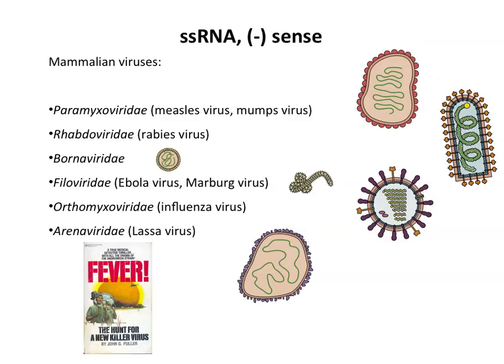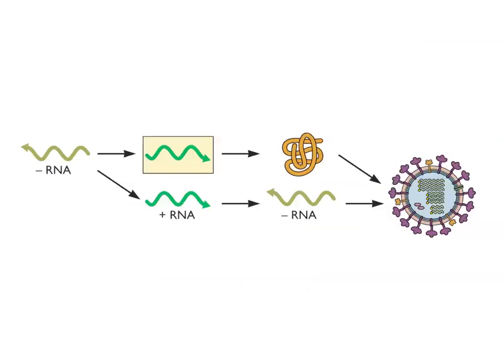Lassa virus was discovered in the 1960s and is the subject of the book 'Fever' by John Fuller — I read this in high school and it's what made me want to be a virologist. It actually involves Columbia University: a virologist at Yale was working with this virus from Nigeria, accidentally infected himself through mouth pipetting, was brought to Columbia Presbyterian Hospital, and was saved by serum from a recovered Nigerian nurse. The virus-encoded RNA polymerase is both in the virion and encoded in the genome — it makes plus RNA and also makes minus RNA from plus RNA.